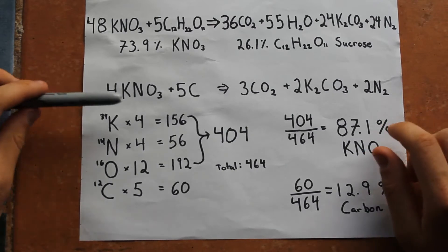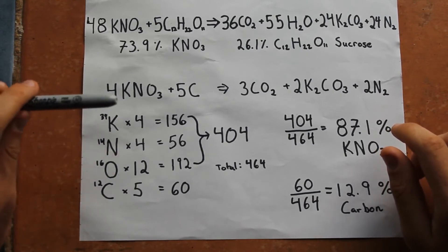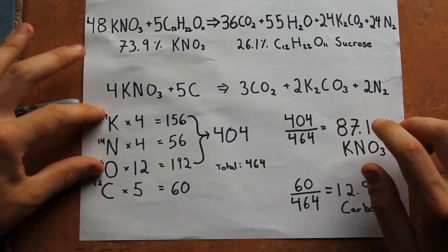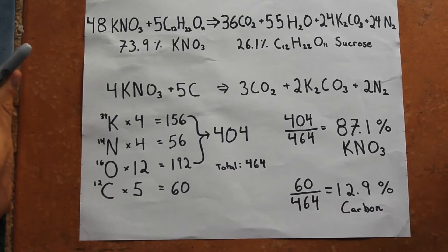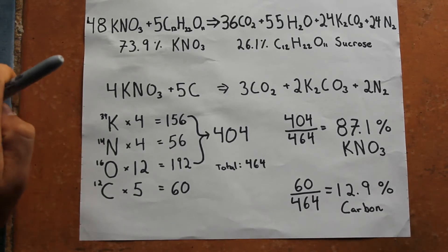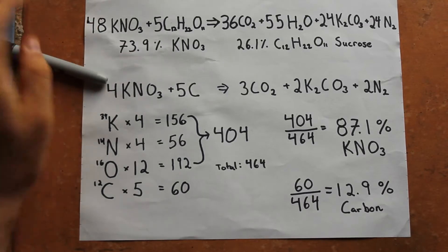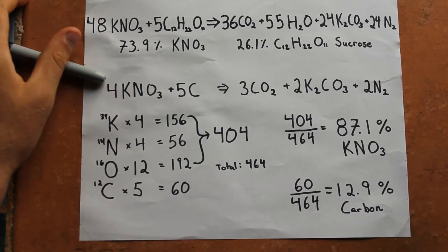When I multiply the atomic weights by the number of molecules in the reactants and add them up for the potassium nitrate side and the carbon side, I get that it should be 87.1% potassium nitrate and 12.9% carbon. I'm not going to follow this exactly — I'm actually going to use 20% carbon, because that's a nice round number. The 20% is a bit more of the fuel, which seems to work better in the sugar version when estimating ratios, and I think that might be a good ratio to try.